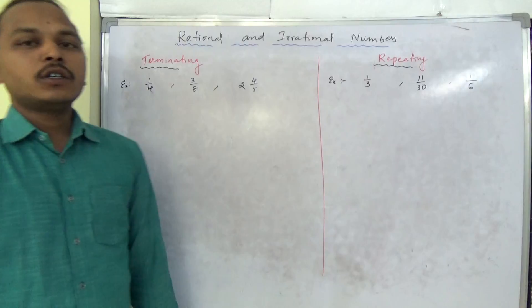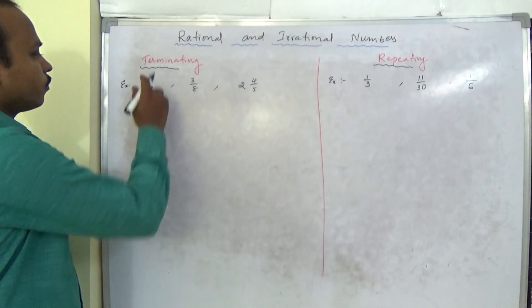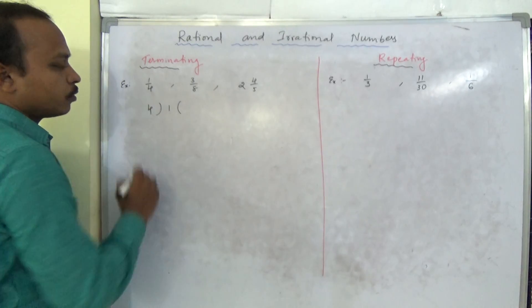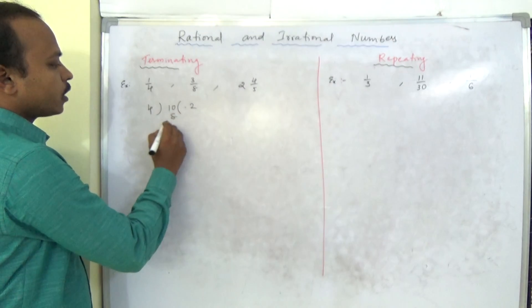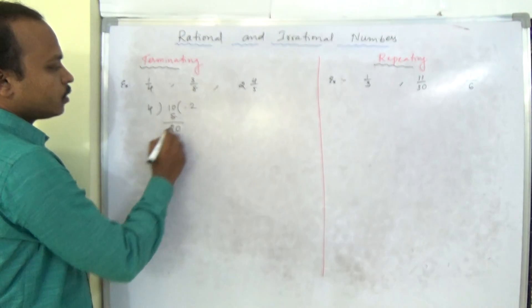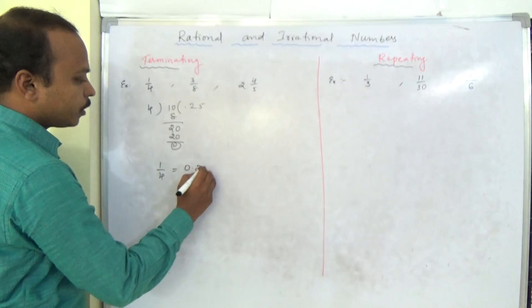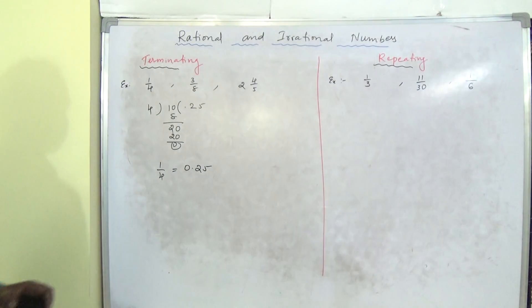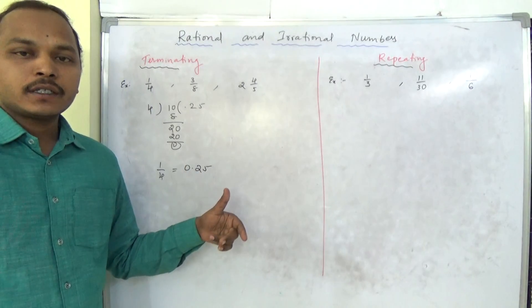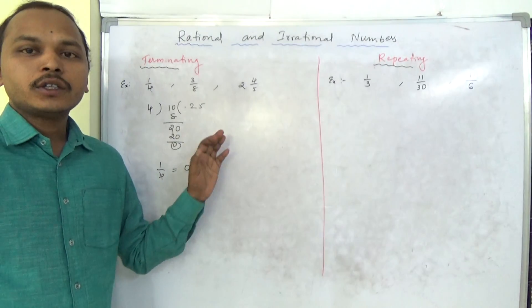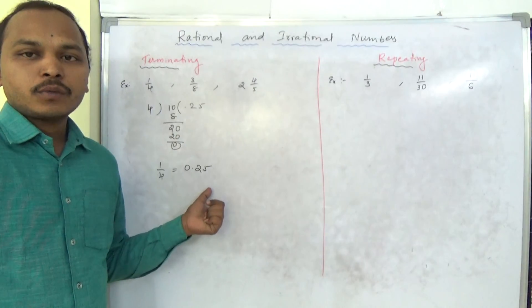First we will see terminating decimals. For example, 1 by 4. If you do the division of 1 divided by 4, keep 0 and the decimal point. 4 into 2 is 8, remainder 2; bring down 0, 4 into 5 is 20. So 1 by 4 equals 0.25. This is a terminating decimal — after certain steps the division stops, meaning the remainder becomes 0.